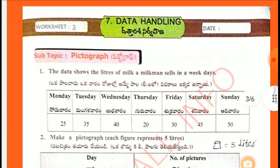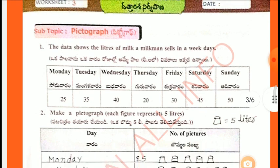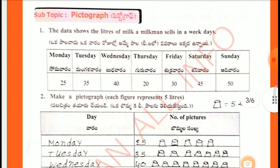Worksheet 3, Sub-Topic: Pictograph. The data shows the liters of milk a milkman sells in a week. Days: Monday 25, Tuesday 35, Wednesday 40, Thursday 20, Friday 30, Saturday 45, Sunday 50.